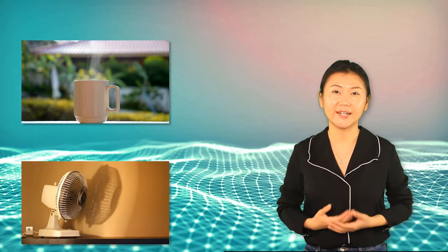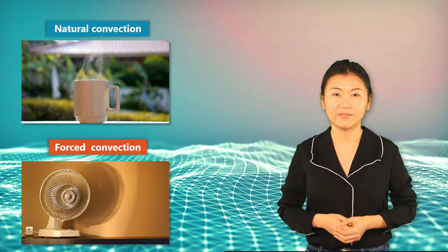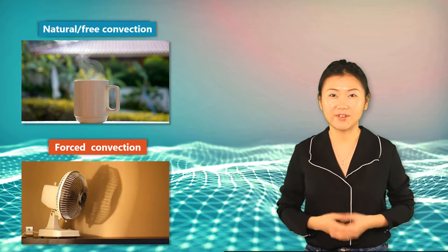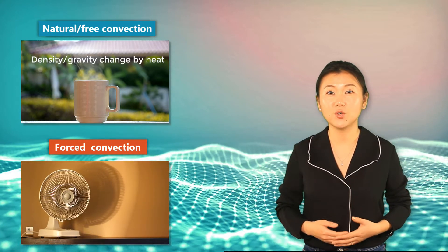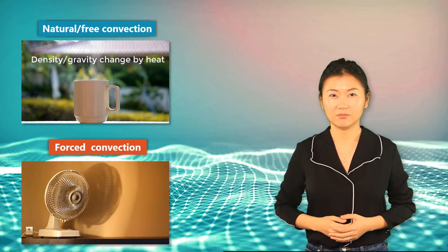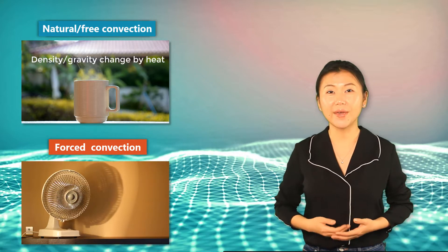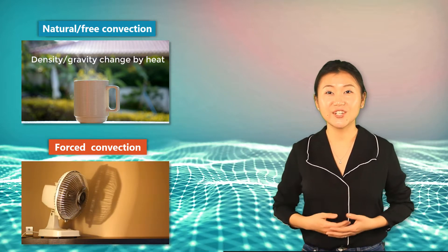Two types of convection are often identified in daily life: one is natural convection and the other is forced convection. Natural convection, also called free convection, occurs due to gravity and density change in the fluid associated with temperature. For example, warm air rises because of its lighter density and cool air sinks because of its higher density.